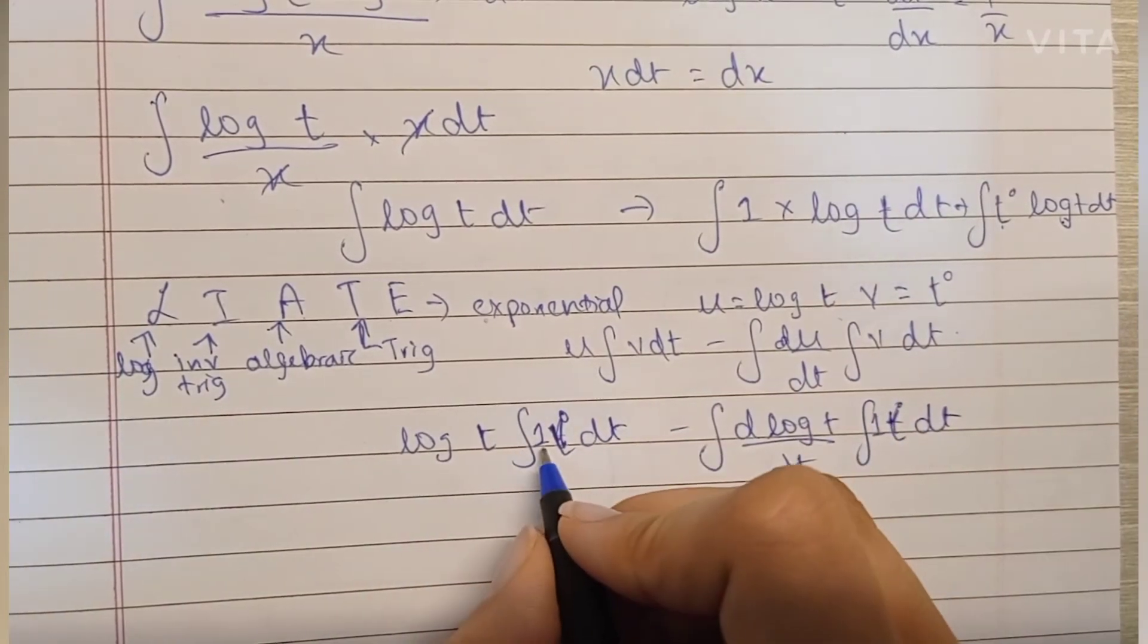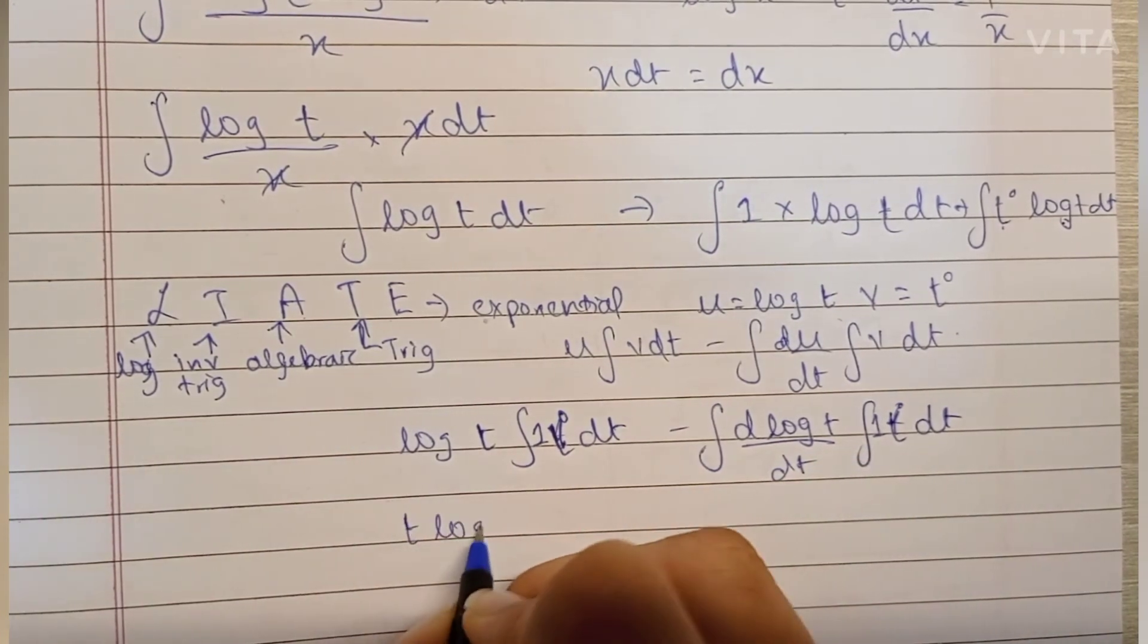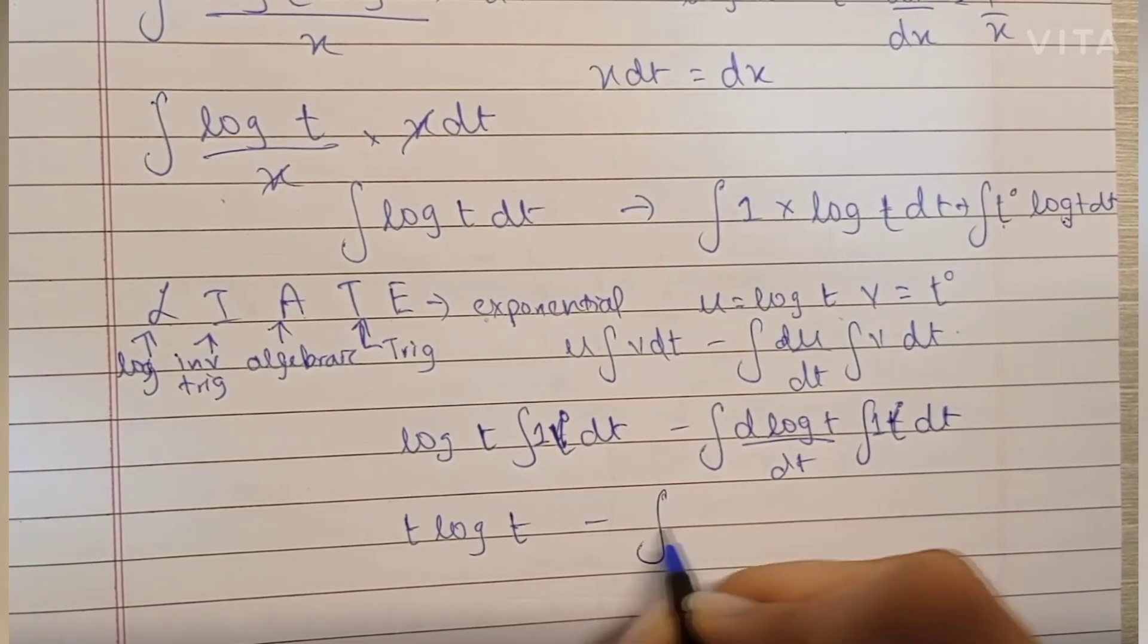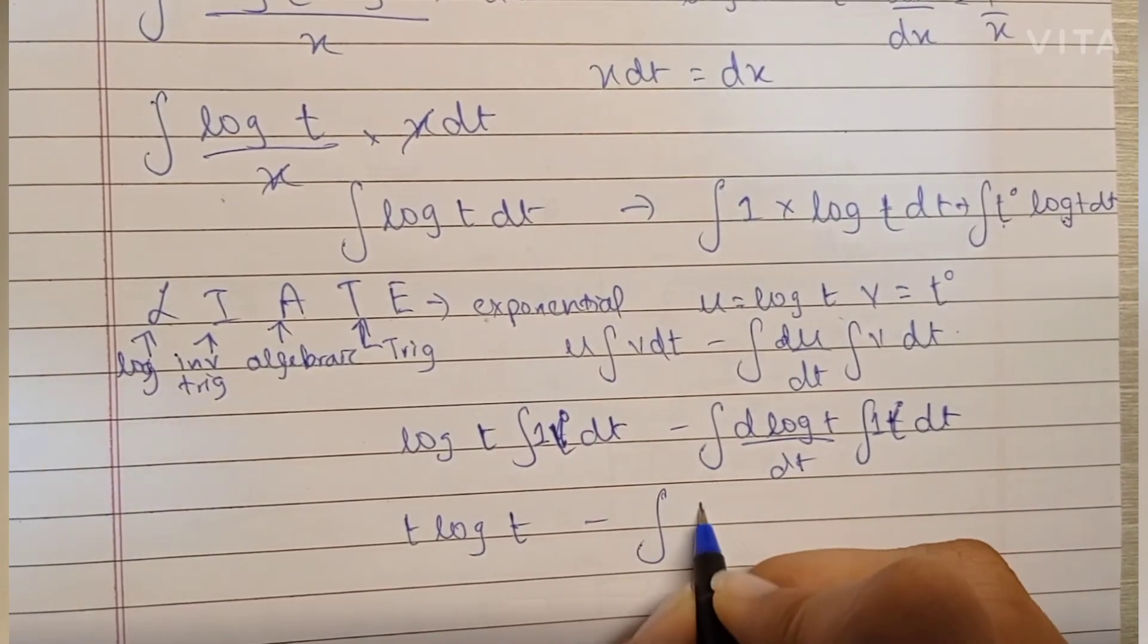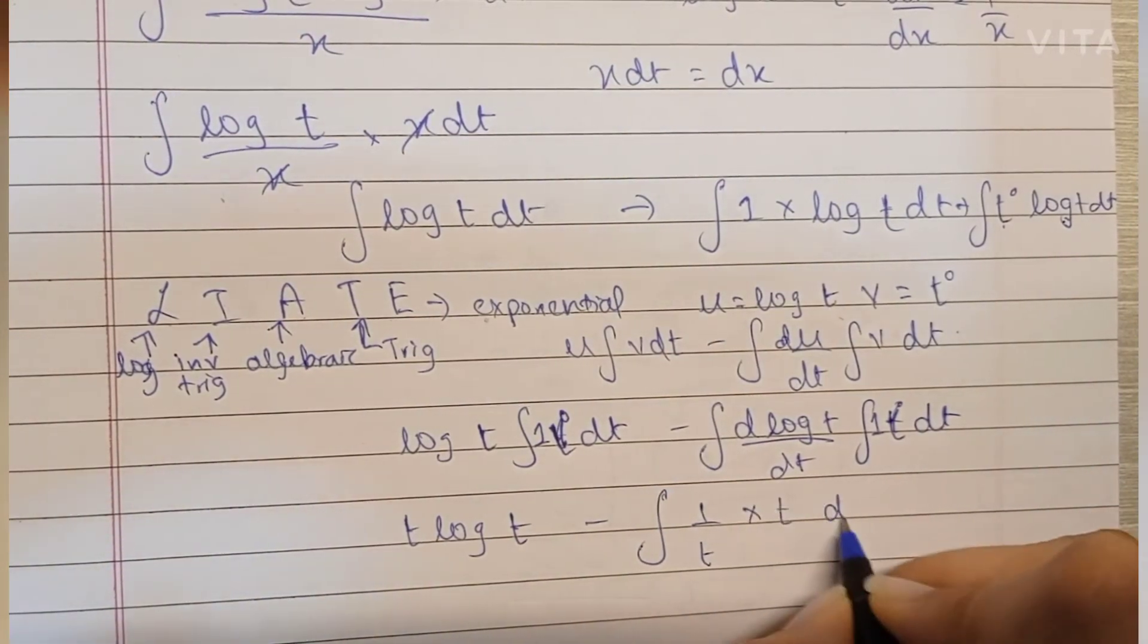So t log t minus integration of differentiation of log t, which is one by t, into t because the integration of one is t again. We have t log t minus, and t gets cancelled.